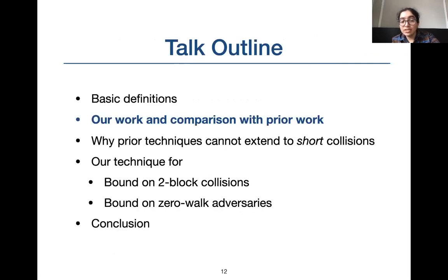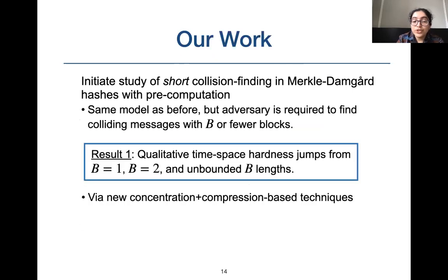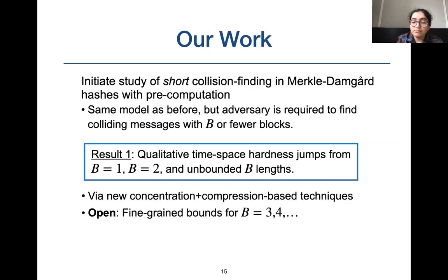Next, I will list our results. We were the first to initiate the study of short collision finding with pre-computations in MD-based hash functions. We modeled our problem as before, but the adversary wins only when it outputs messages with B or fewer blocks. We show it is easier to find two-block-long collisions compared to one-block-long collisions, but harder than finding unbounded-length collisions. Our conjecture bound for B-block collision finding is stB/n.